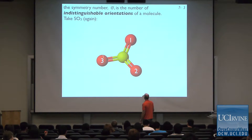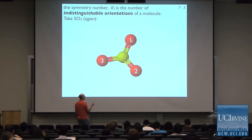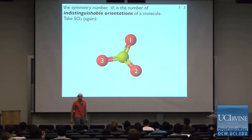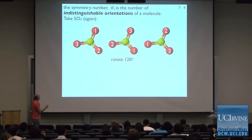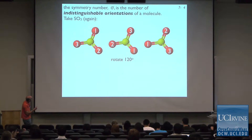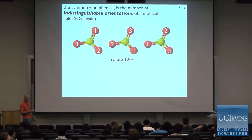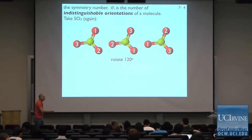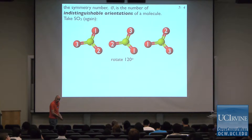For example, SO3 is a molecule we talked about on Friday. I've taken it and labeled the oxygens so we can keep track of them. If I take this molecule and rotate it by 120 degrees, this oxygen rotates down, this one goes over here, and this one ends up here. So there are three orientations shown on the screen from 120-degree rotations. Is that it for this molecule?